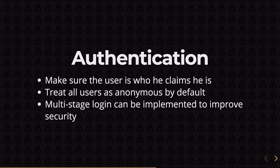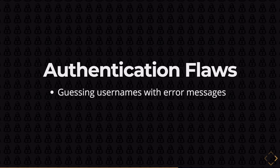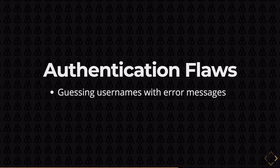For improving authentication control, you can also have multi-staged login — that is, maybe an OTP on email address, one-time password on email address, two-factor authentication, stuff like that. That could be implemented to improve authentication. Now there are some fundamental flaws with authentication as well which are very commonly found on the web. The first one is guessing usernames with error messages — one of the most common flaws in authentication mechanisms, and I'll show you one example real quick after this.